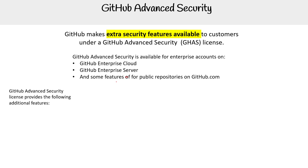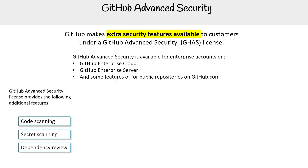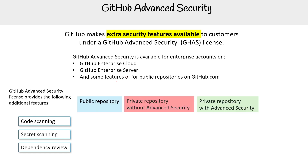The features they're talking about are code scanning, secret scanning, and dependency review. Based on whether you're a public repo or a private repo without advanced security, you're going to have different access.